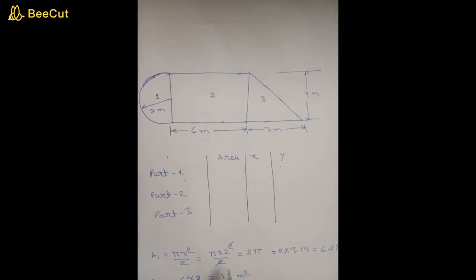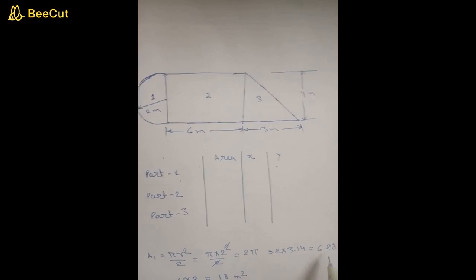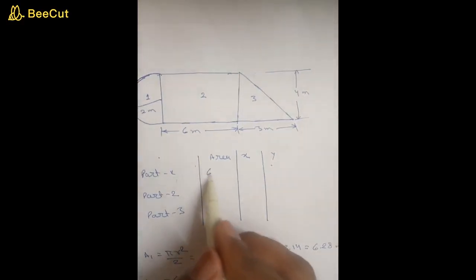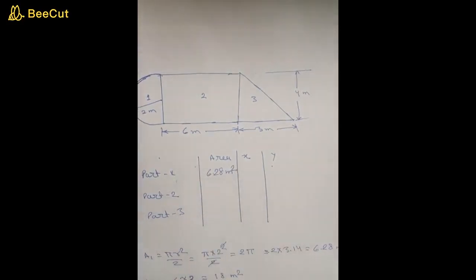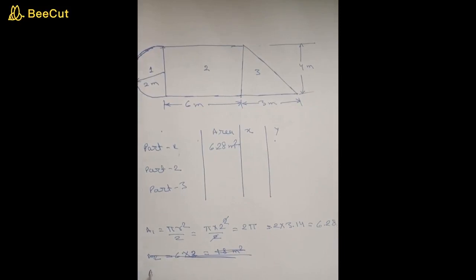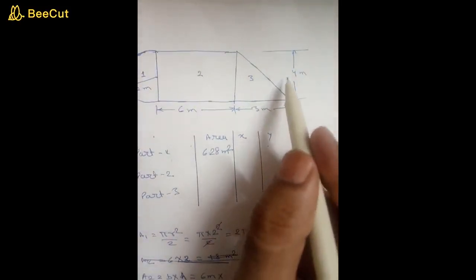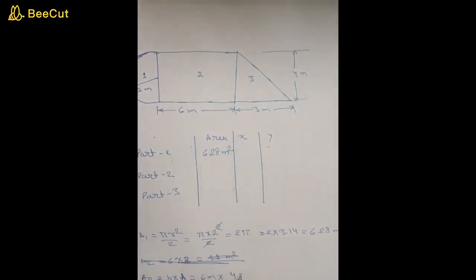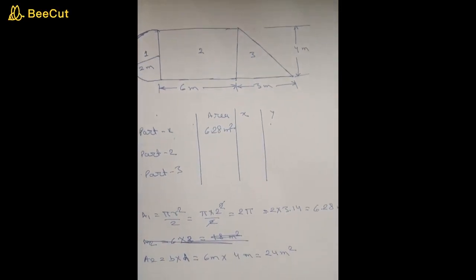The area of the semicircle A1 is pi r squared by 2, because pi r squared is the area of the full circle and this is a half circle. So we get 6.28 square meters. For part 2, which is a rectangle, A2 will be breadth times height: 6 meters by 4 meters, giving 24 square meters.